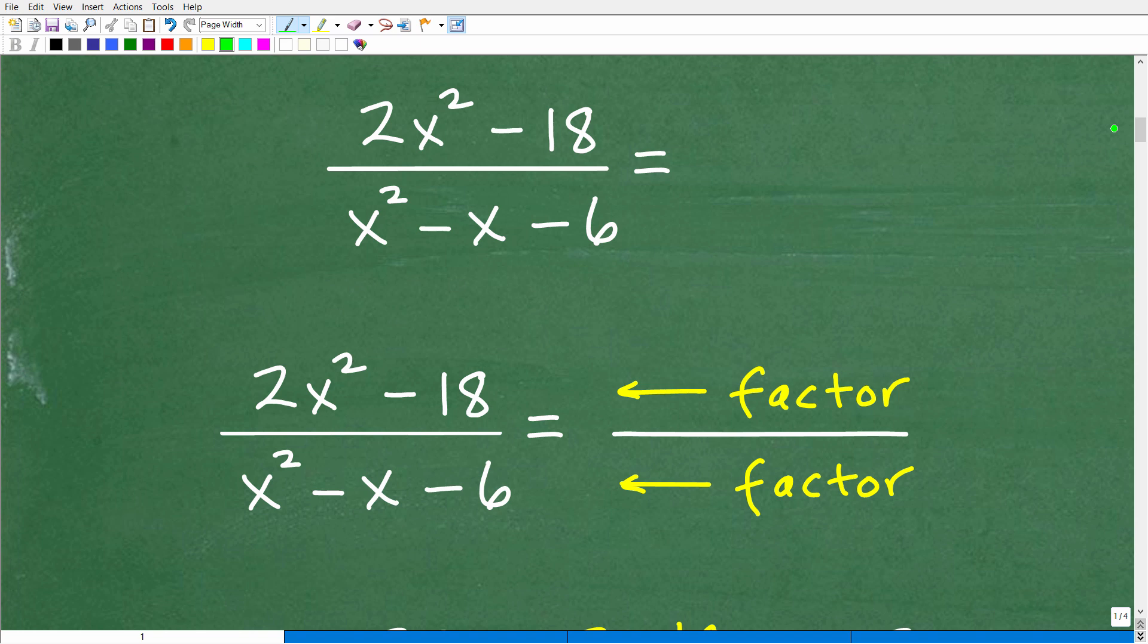Let's get into the solution right now. Here is the problem again: we have 2x squared minus 18 over x squared minus x minus 6. Now, what we want to do is to write this in a simpler way. We don't know if that's possible or not.